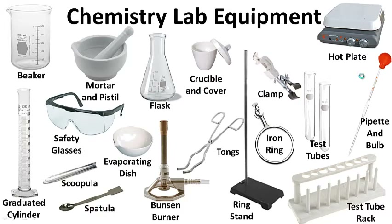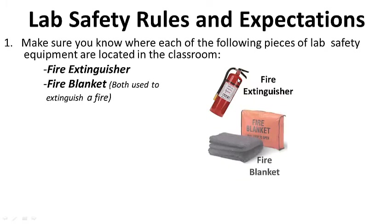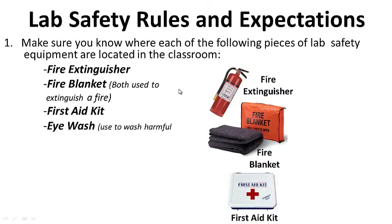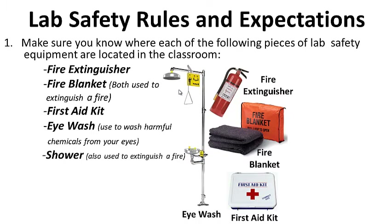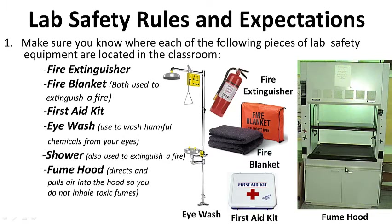Moving on — lab safety rules and expectations. Make sure you know where each piece of lab safety equipment is located in the classroom. The fire extinguisher and fire blanket are both used to extinguish a fire. The first aid kit, the eye wash — used to wash harmful chemicals from your eyes — and the shower, also used to extinguish a fire.